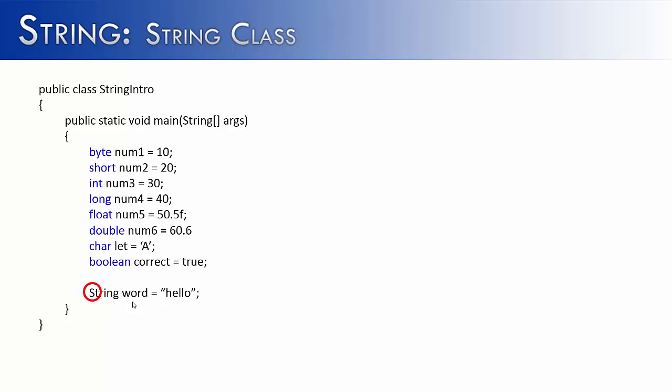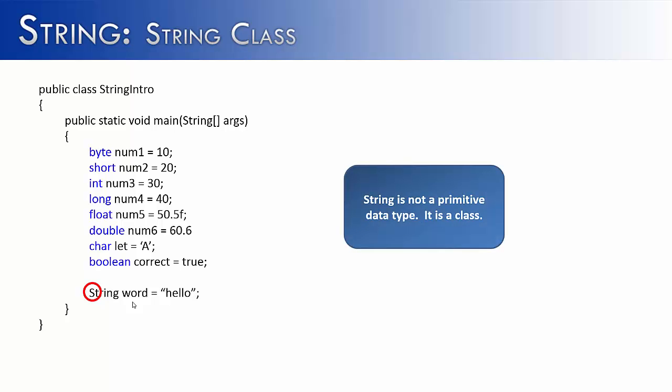A capital letter indicates that you're probably dealing with a class, and in this case you are. You're dealing with the string class. So it's important to note that a string is not a primitive. It is a class.